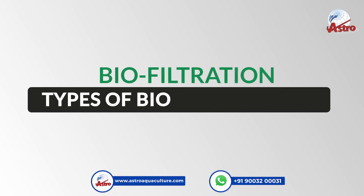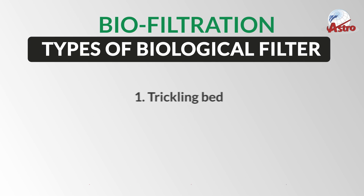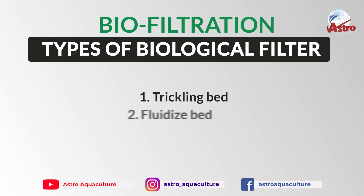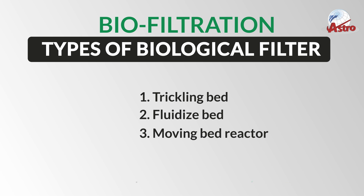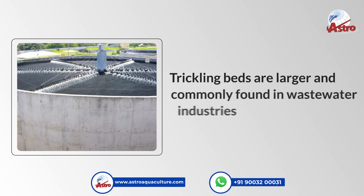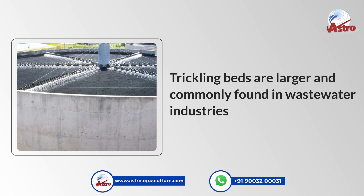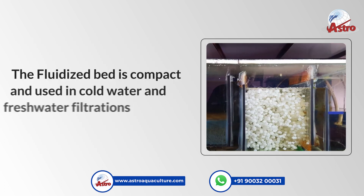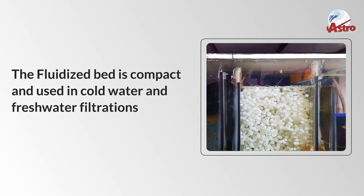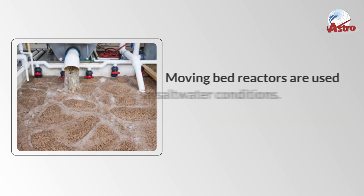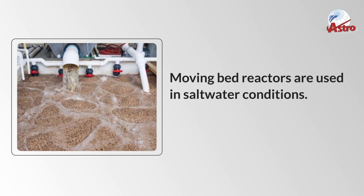Biofiltration Part 2 covers three types of biological filters: Trickling Bed, Fluidized Bed, and Moving Bed Reactor. Trickling beds are larger and commonly found in wastewater industries. The fluidized bed is compact and used in cold water and freshwater filtrations. Moving Bed Reactors are used in saltwater conditions.